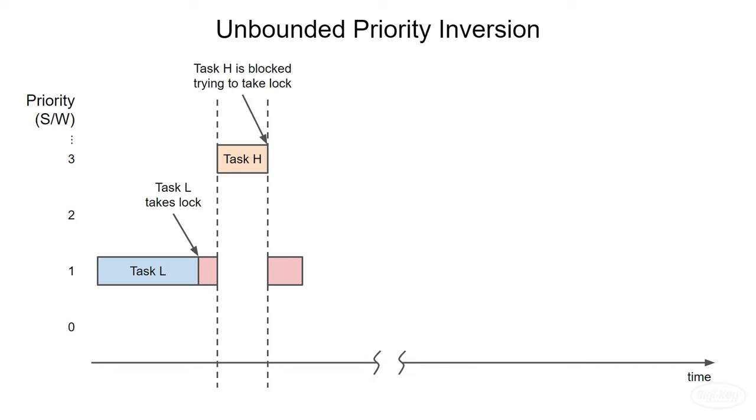However, the real problem came into play when a medium-priority task was introduced. On Pathfinder, this thread handled various communications and could take a long time. Normally, the three tasks played nicely with each other. Every now and then, though, the medium-priority task would run while the low-priority task was in the critical section.